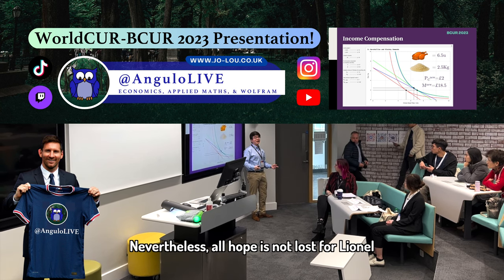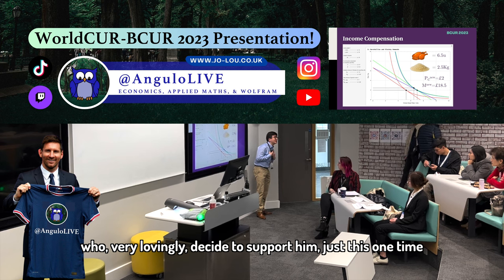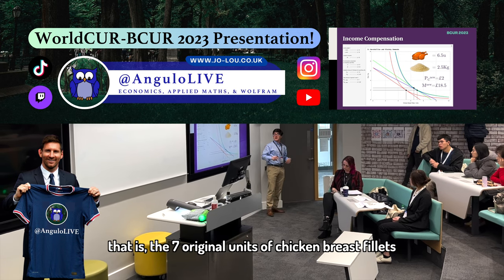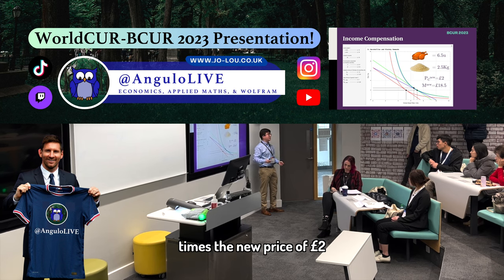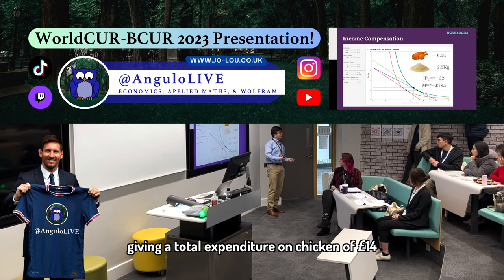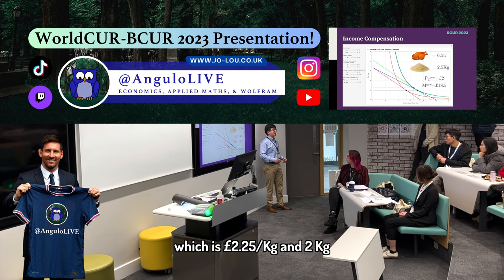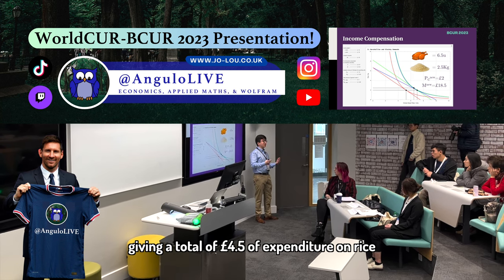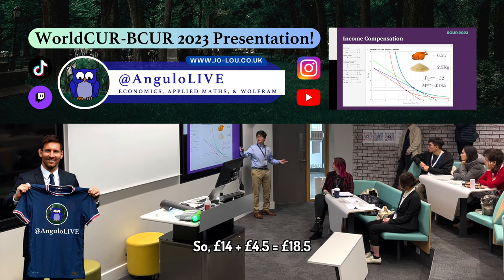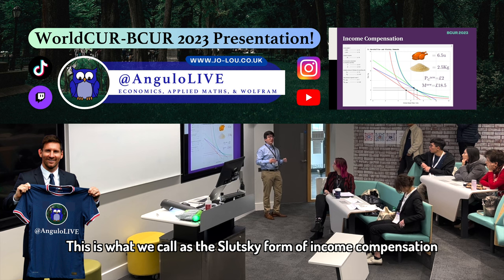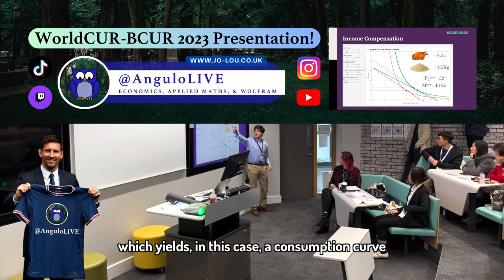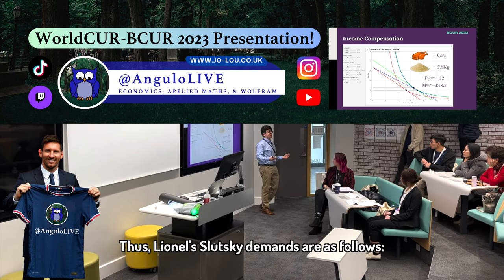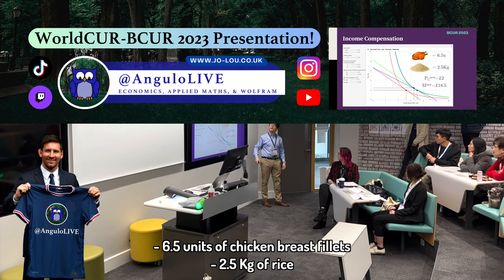Nevertheless, all hope is not lost for Lionel, as he tells the situation to his flatmates, who very lovingly decide to support him just this one time and see it fit for him to be able to return to his original purchasing power. That is, the seven original units of chicken breast times the new price of £2, giving a total expenditure on chicken of £14, plus the unchanged price-quantity for rice of £2.25 per kilogram times 2, giving a total of £4.50 of expenditure on rice. So £14 plus £4.50 is equal to £18.50. This is what we call the Slutsky form of income compensation, which yields in this case a consumption curve just a little bit greater than the original blue one, shown here in green. Thus, Lionel's Slutsky Demands are: 6.5 units of chicken breast and 2.5 kilograms of rice.